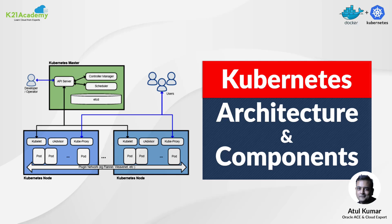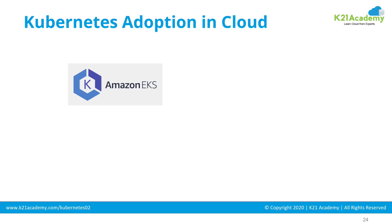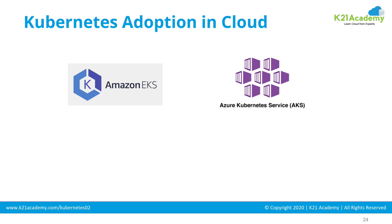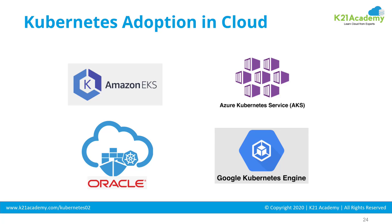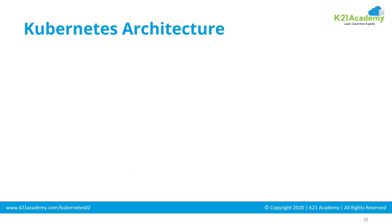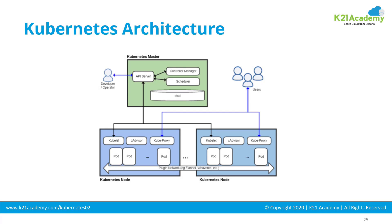Kubernetes is an open source orchestration tool for deploying, maintaining, and scaling up a containerized application. Almost every cloud provider is running a managed Kubernetes service in cloud, be it Amazon AWS's Elastic Kubernetes Service, Microsoft Azure Kubernetes Services, Google Kubernetes Engine, or Oracle Kubernetes Engine. The architecture of Kubernetes includes a master node and one or more worker nodes.